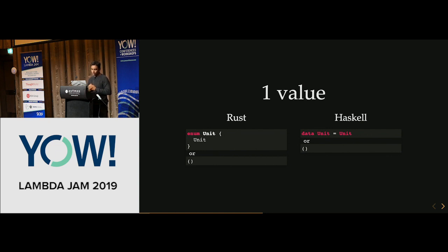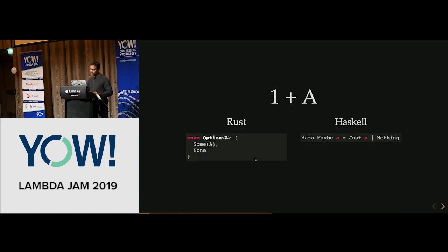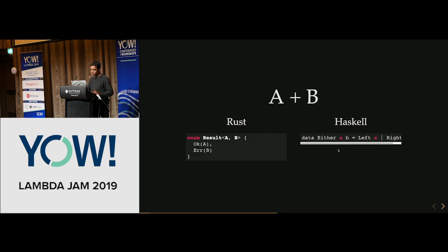More useful is something which has one value, called unit in most languages — some languages call it void. You can define unit using enum, similar to how we do it in Haskell, or Rust has a built-in unit type. If a function doesn't return a value, it returns the unit type. Enum is a sum type — it's a sum of the variants you define. Option is a type constructor that takes a type parameter and creates Some(a) or None — the equivalent in Haskell is Maybe. And you can define Either in Rust; in the standard library it's called Result.